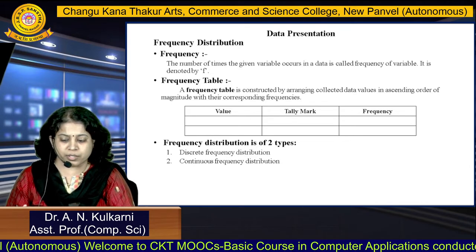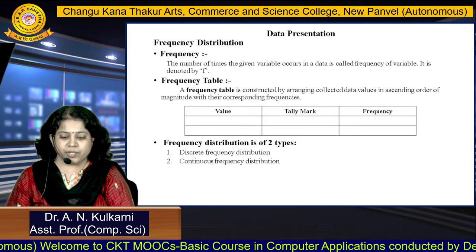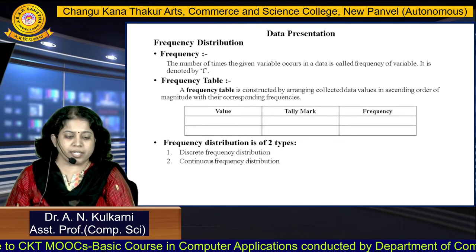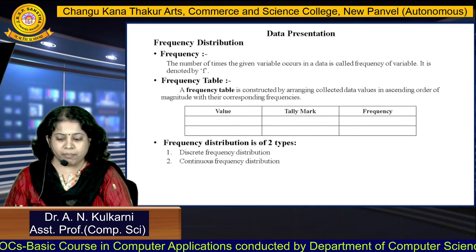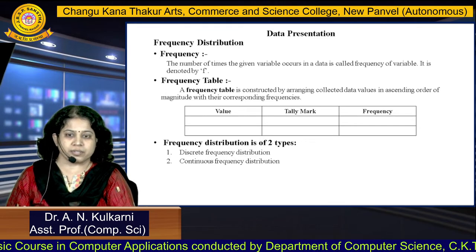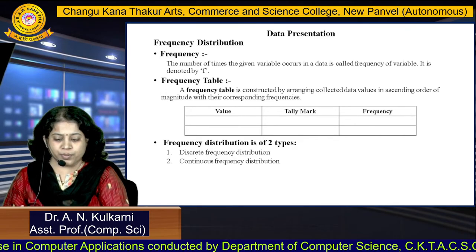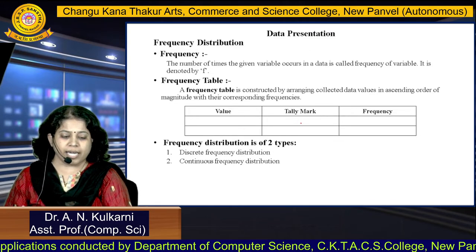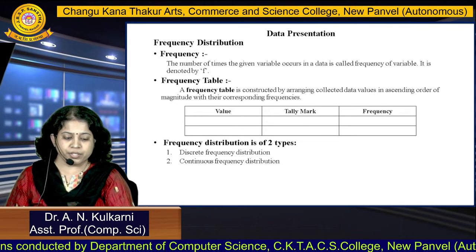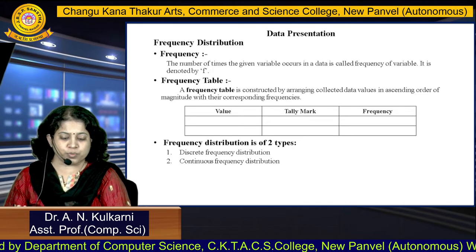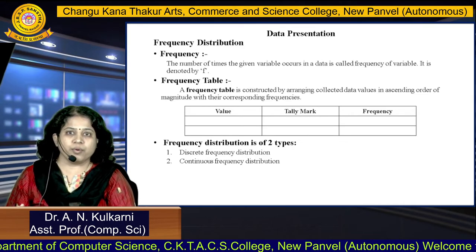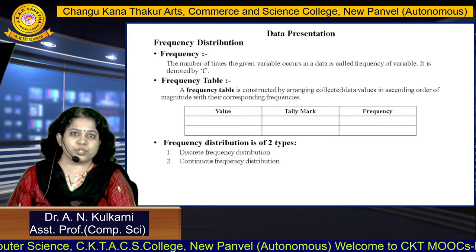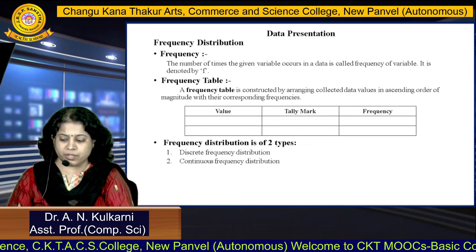How do you construct a frequency table? In a frequency table, we arrange the collected data values in ascending order of magnitude with their corresponding frequencies. The first column contains the data item values, the second column contains tally marks, and the third column contains the frequency. Frequency distribution is of two types: discrete frequency distribution and continuous frequency distribution.